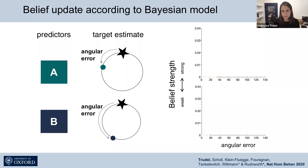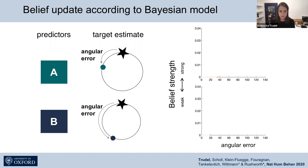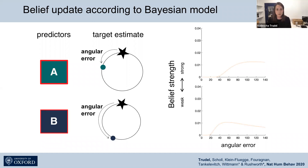Let's look at how belief distributions actually change across time when you select multiple times from the same predictor. The upper panel shows how the belief distribution changes for a good predictor, and the lower panel for a worse predictor. On the x-axis is the angular error representing quality of performance — a higher number means a worse angular error. On the y-axis is the belief strength, with a higher number reflecting that the participant thinks that angular error is more likely to underlie the true distribution. Choosing from a predictor one of the first times, the distribution is quite shallow, covering many angular errors with similar belief strength.